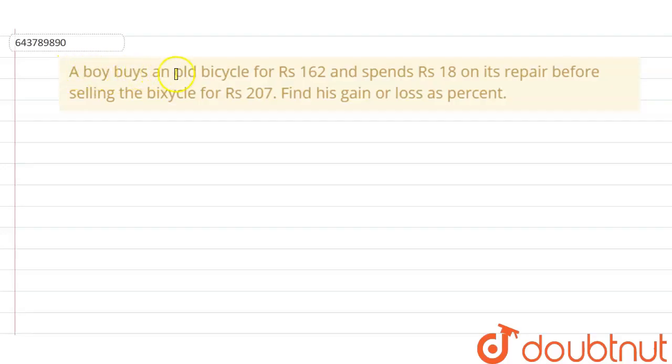A boy buys an old bicycle for rupees 162 and spends 18 rupees on its repair before selling the bicycle for rupees 207. Find the gain or loss percentage. We have to find the gain or loss percentage.